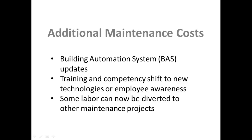Let's look at additional maintenance costs. Building automation systems, which are popular and valuable in many schools, will need updates from time to time — software updates, additional control points, and similar work. Other ongoing costs include training and competency development as staff shift to new technologies, and time spent on employee awareness initiatives. These are things that may be additional costs to help continue and maintain the success of your program.